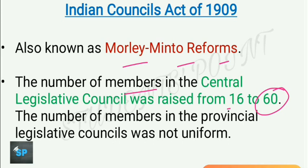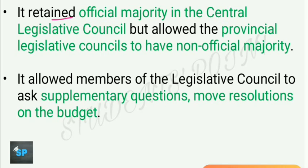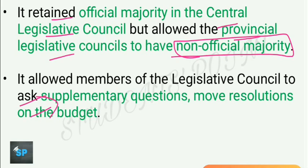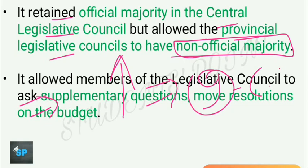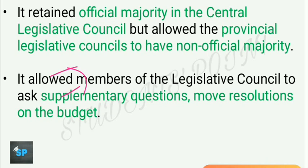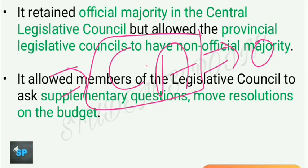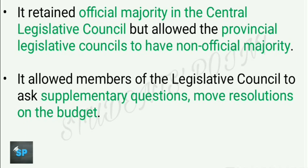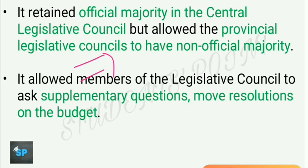The number of members in the provincial legislative councils was not uniform. This act retained the official majority in the central legislative council. However, it allowed the provincial legislative councils to have non-official majority. It also allowed members of legislative councils to ask supplementary questions and move resolutions on the budget. In the Indian Councils Act of 1892, only discussion of the budget was allowed and only single questions — no supplementary questions. This act permitted supplementary questions for the first time.